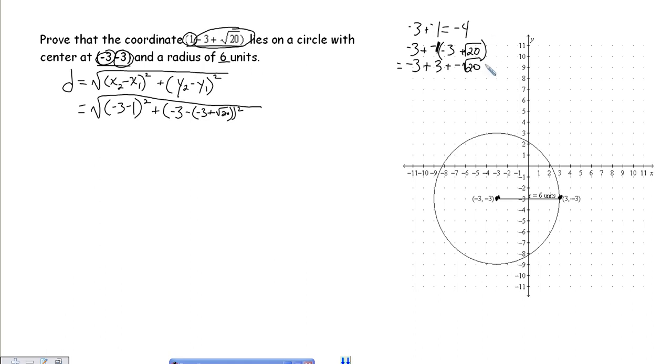And in this situation, negative 3 plus 3 is 0, and we're just left with 0 plus the negative square root of 20, or negative square root of 20. So on our distance formula we now have negative 4 squared plus negative the square root of 20 squared.